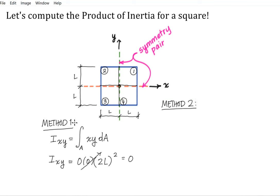And we just want to sum those up. So I_XY is going to be equal to X1 Y1 A1 plus X2 Y2 A2 plus X3 Y3 A3 plus X4 Y4 A4.